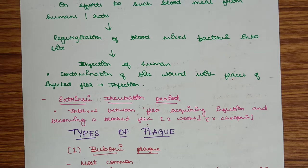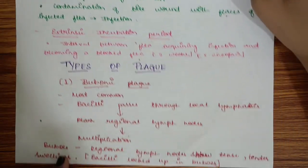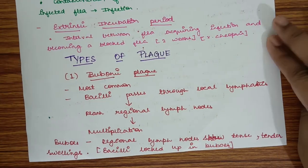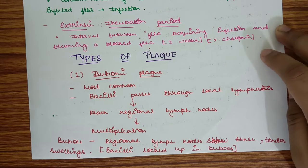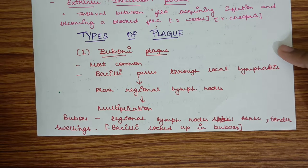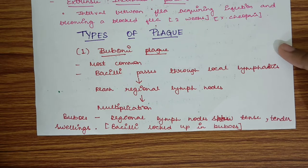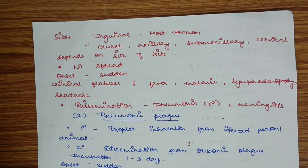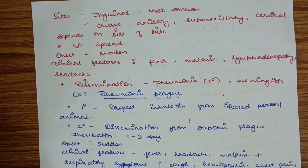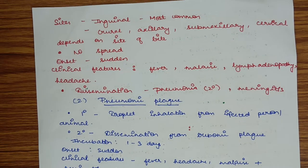Types of plague: bubonic plague, pneumonic plague, and septicemic plague. Bubonic plague is the most common. Bacteria pass through local lymphatics to regional lymph nodes where they multiply, forming bubos—tense, tender swellings of regional lymph nodes with bacilli locked up inside. Sites include inguinal (most common), crural, axillary, submaxillary, and cervical, depending on bite site. Generally no spread seen except on direct contact with bubos.